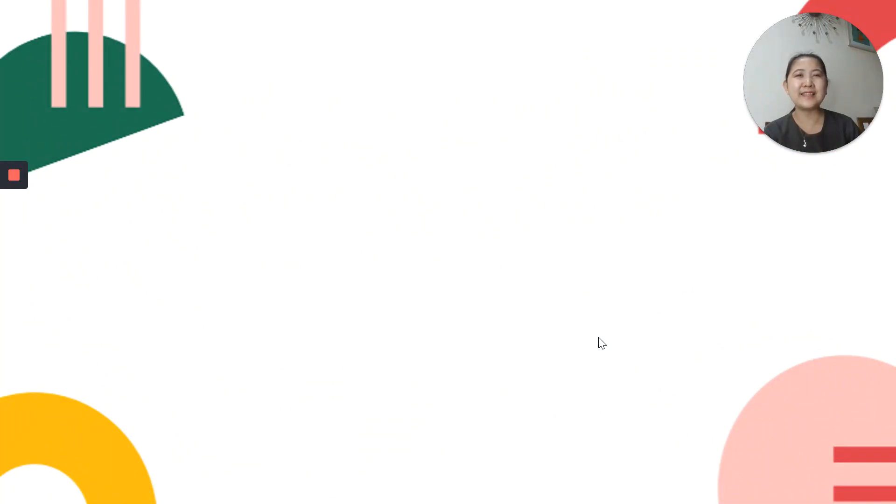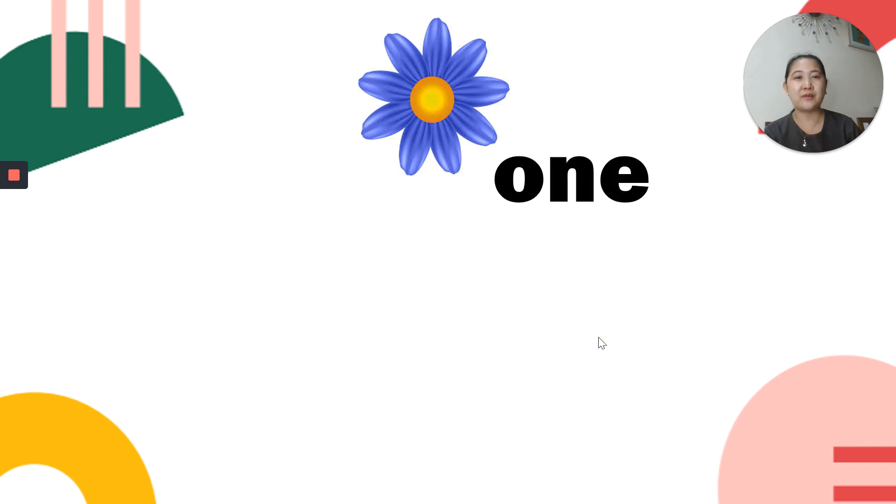Now what number is next after 0? Yeah, 1. Now look, there is only 1 flower, 1 blue flower. So that's how we write 1 in words and 1 in symbols.